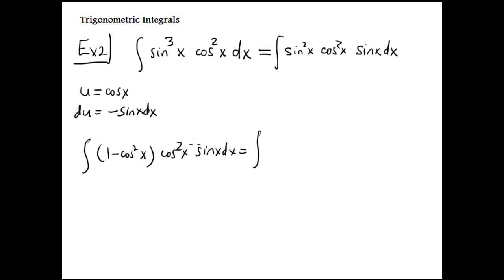U substitution. We need the complete differential. Minus here, minus here. This is minus, minus, minus. One minus u squared because cosine is u, times u squared du. This is our integral.